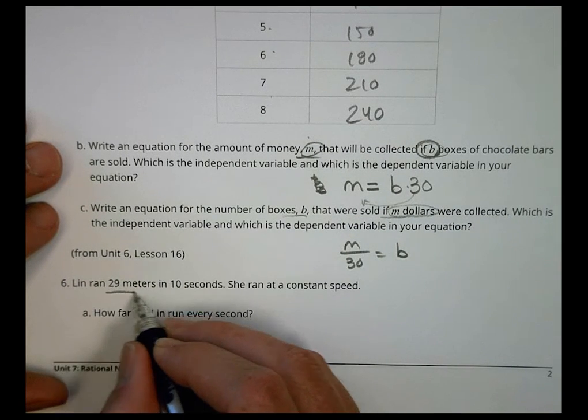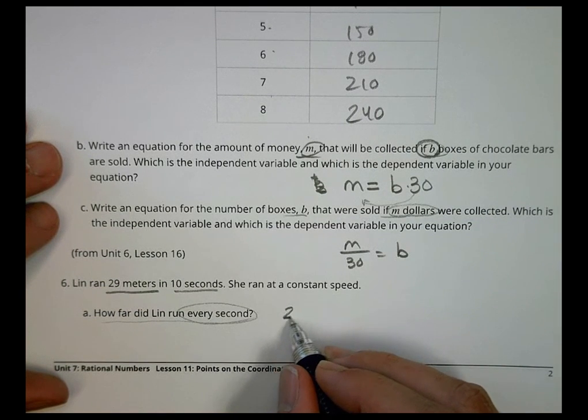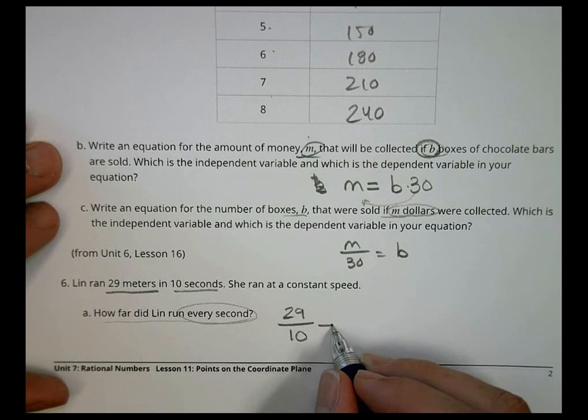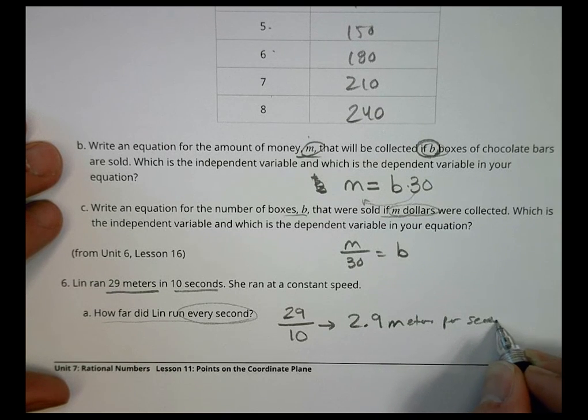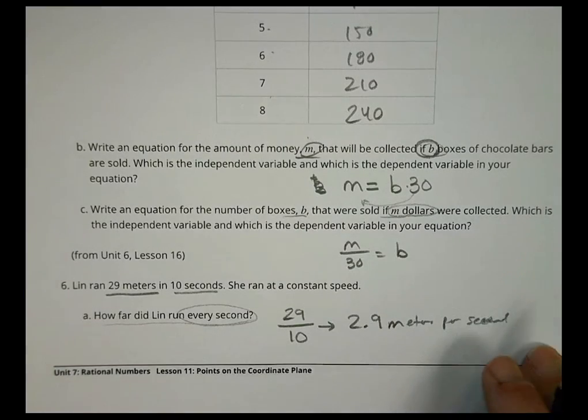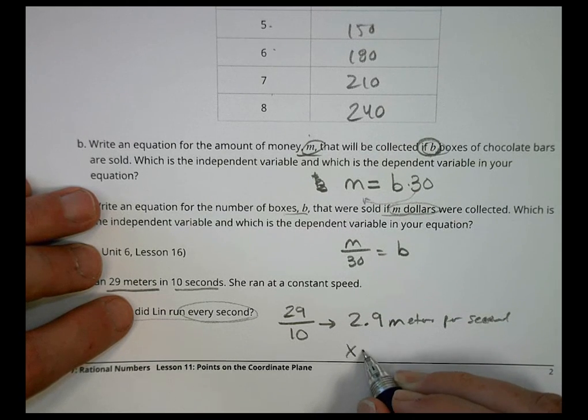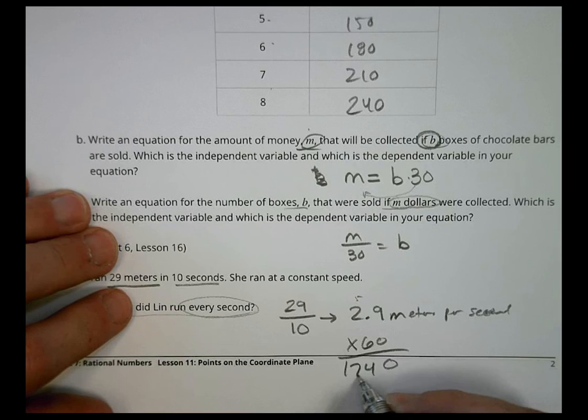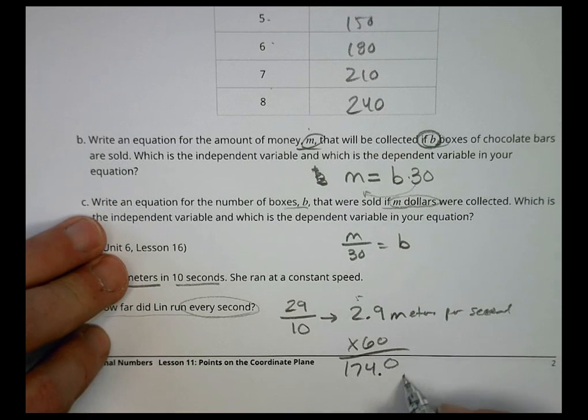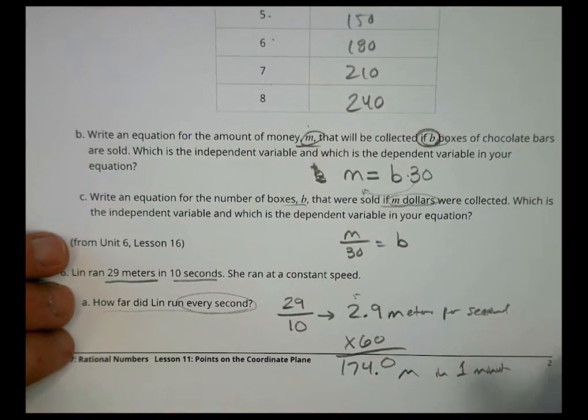Number 6. Lynn ran 29 meters in 10 seconds. She ran at a constant speed. How far did she run every second? So what is that? That's 29 divided by 10 seconds, which becomes 2.9 meters per second. And the next question on the back side said, how far can she run in one minute? Well, if she can run 2.9 meters in a second, there are 60 seconds in a minute. So we would say 2.9 times 60, she can go 174 meters in one minute. And there you go. And that's the answer to the back side. That's it for today. Have a great day. We'll see you next time.